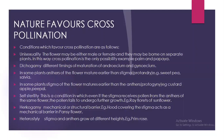Self-incompatibility is the condition in which even if the stigma receives pollen from the anthers of the same flower, the pollen fails to undergo further growth. For example, ray florets of sunflower. Then herkogamy: a mechanical or structural barrier — for example, a hood covering the stigma acts as a mechanical barrier, as in the pansy flower.